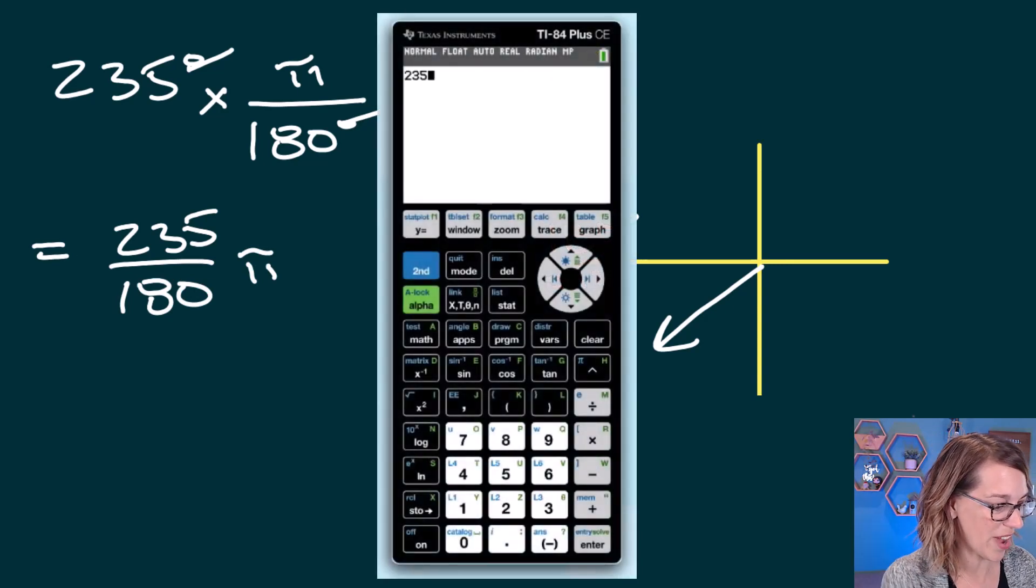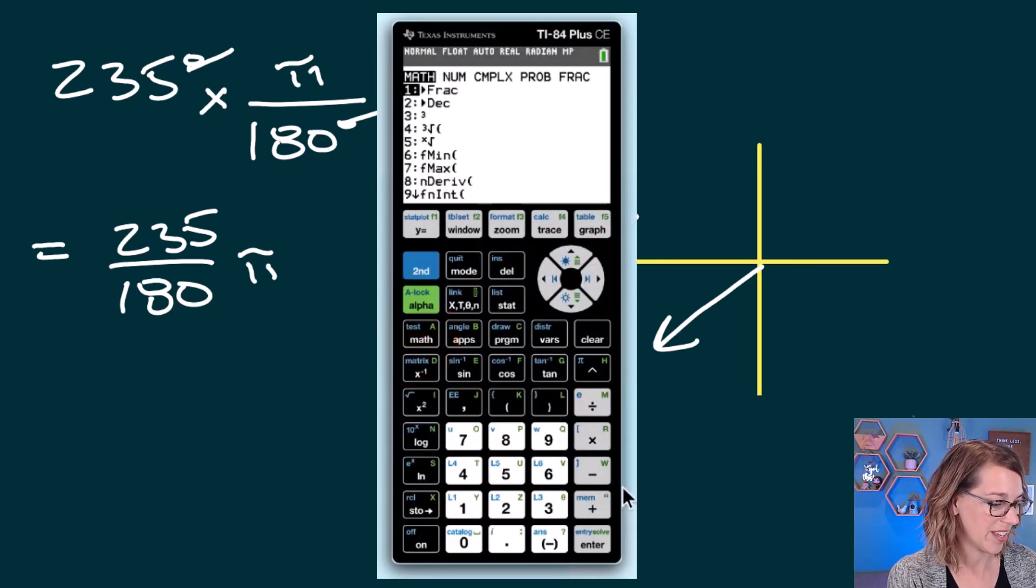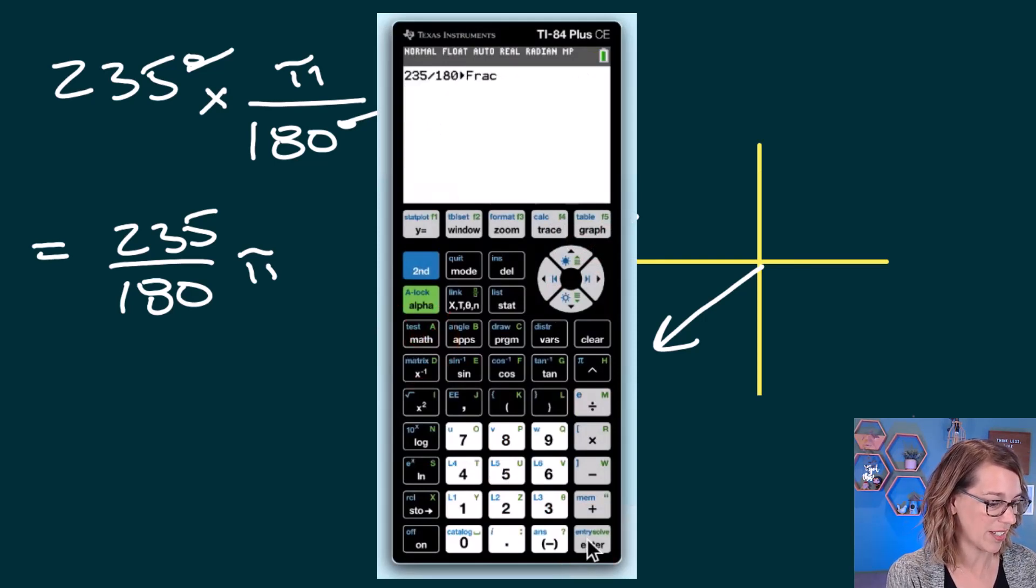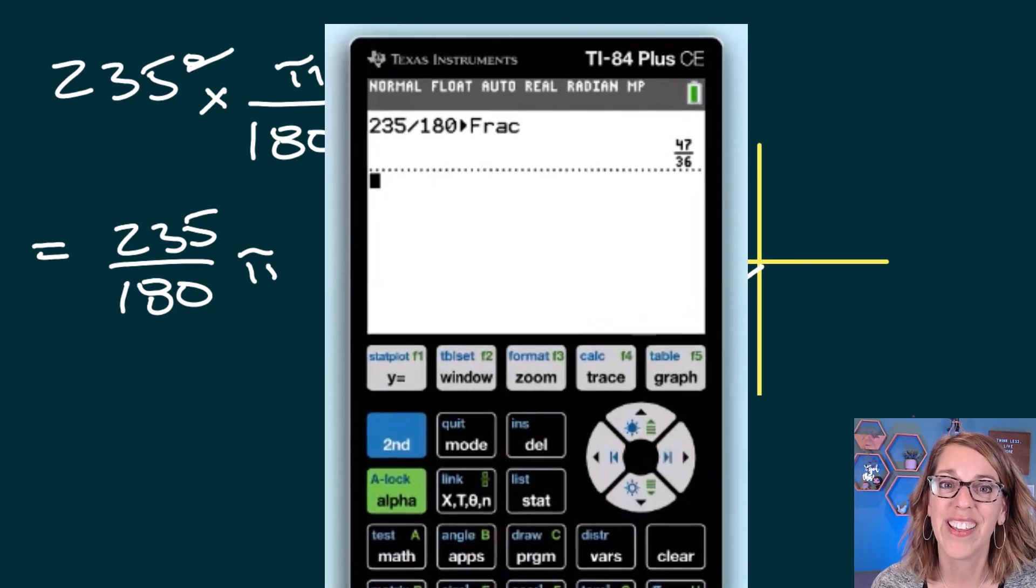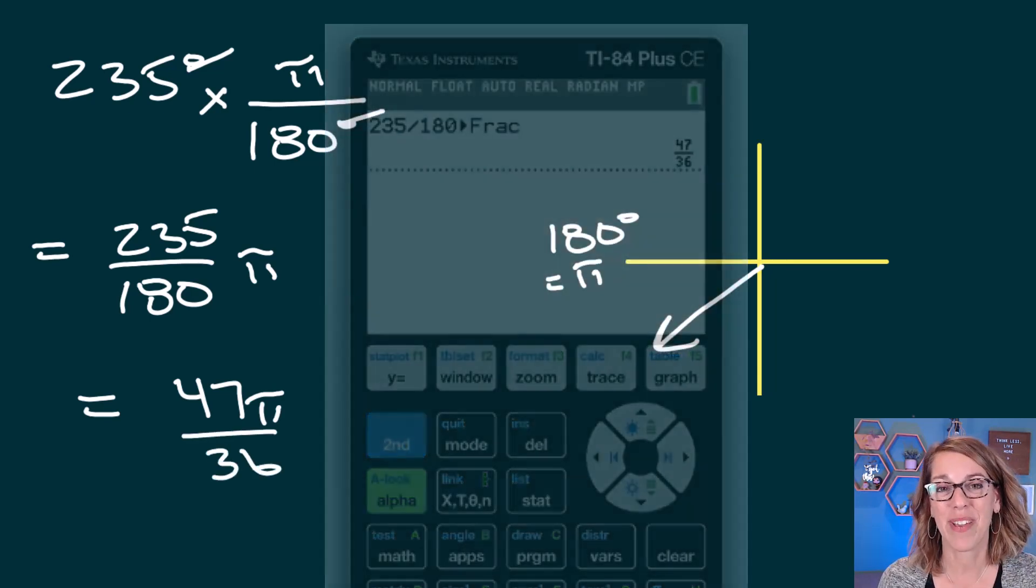So let's do 235 divided by 180, and I'm going to convert that to fraction. So math, convert to fraction. So nice to let the calculator do our reducing. This one turns out to be 47π/36, 47π/36 radians. I'll bet you did great.